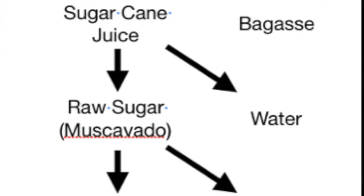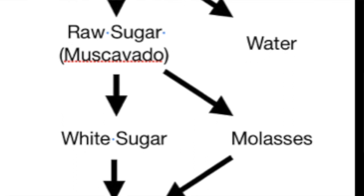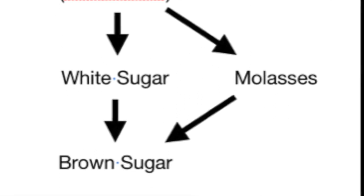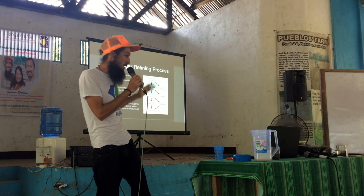We take raw sugar — muscovado — and do a mechanical process to create refined white sugar, and at that time the molasses is stripped out. So the difference between muscovado and white sugar is that molasses has been removed. Then to make brown sugar, they take refined white sugar and molasses and recombine them at different ratios to make light or dark brown sugar, which have different values in cooking.